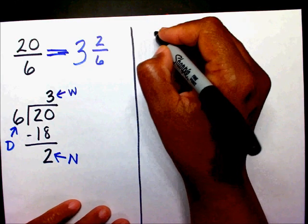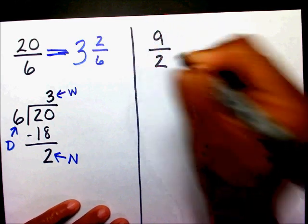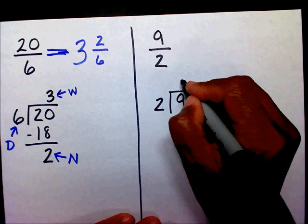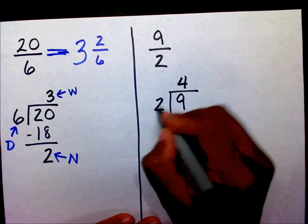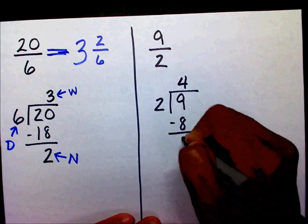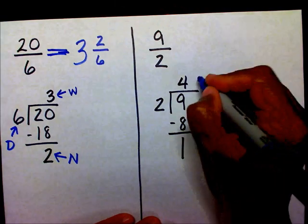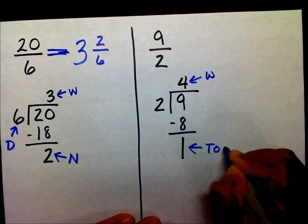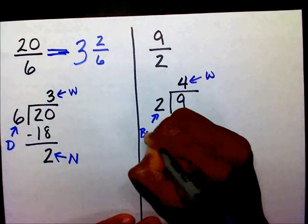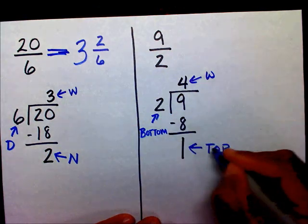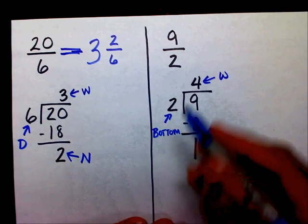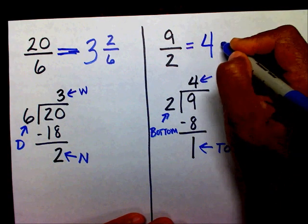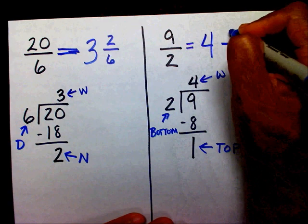Let me try one more — nine halves. I'm going to say nine divided by two. Two goes into nine four times. Four times two is eight. Subtract, leaving a remainder of one. This is my whole number, this number will go in the top, and this number will go in the bottom — just in case you didn't understand numerator and denominator. So my whole number is four, draw my fraction bar, one goes on top, two goes on the bottom.